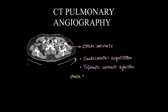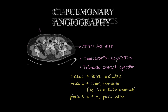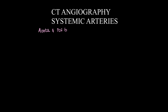In triphasic injection: Phase 1 — 50 mL of undiluted contrast is given. Phase 2 — 30 mL of contrast in a 70:30 dilution (70% saline, 30% contrast) is given. Phase 3 — 50 mL of pure saline is given. Moving on to angiography of systemic arteries — the aorta and its branches.